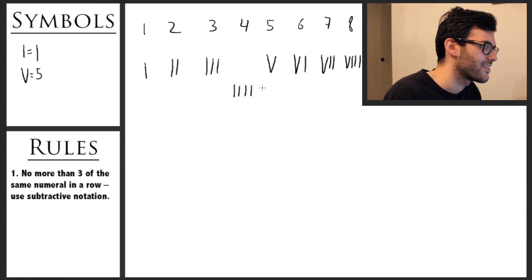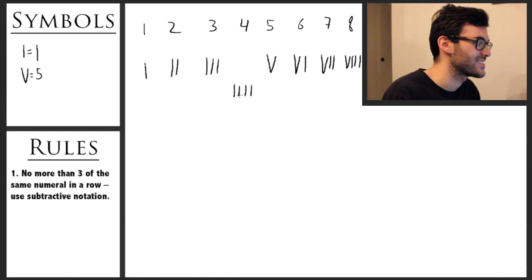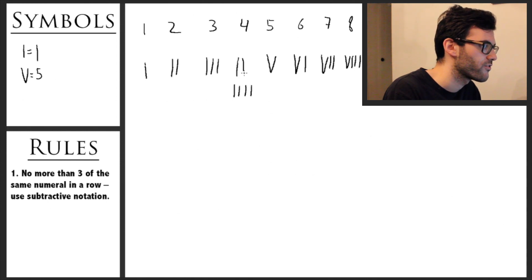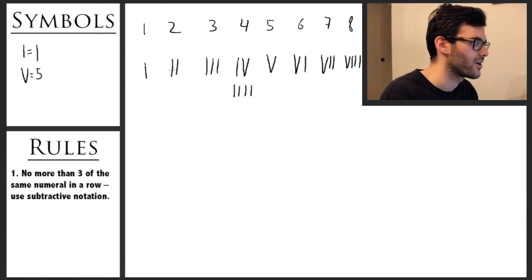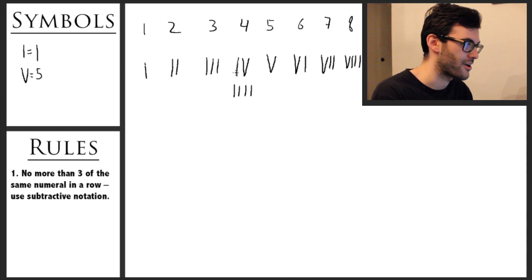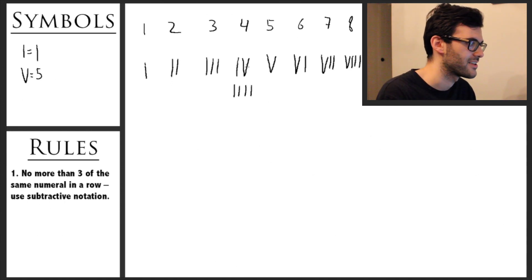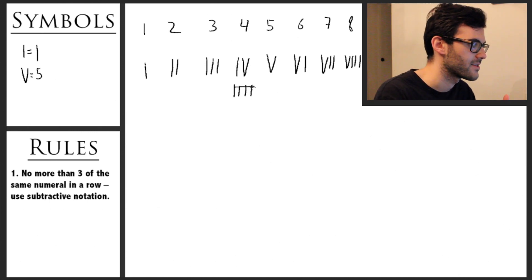Here we can see that there are four I's, and that's more than three. So we have to use subtractive notation, and instead of writing it as IIII, we have to write it as one before five — literally in where it appears in the number, it's right before five. And so that tells us it's one subtracted from five: IV. Then we go V, VI, VII, VIII. That's kind of how subtractive notation works.